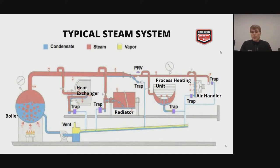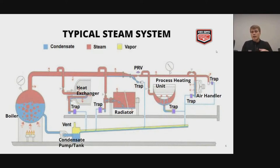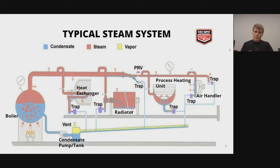Another use would be an air handler. For heating a large building, you can run steam through coils in the air handlers and then run a fan over it. At the end of the line we have a drain trap to drain any water in the line, preventing water hammer and water buildup. Once the steam goes out through the steam trap, it will go back down into the condensate pump and tank to be typically reused, unless it's contaminated.